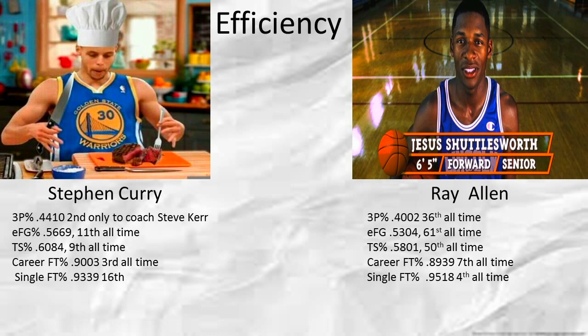In true shooting percentage, which measures free throws, three-pointers, and field goal percentage, Stephen Curry shoots 60.84%, good for 9th all time, and Ray Allen shoots 58.01%, good for 50th all time.